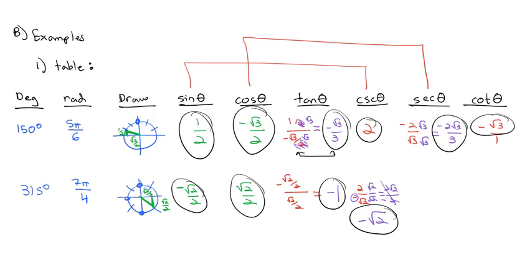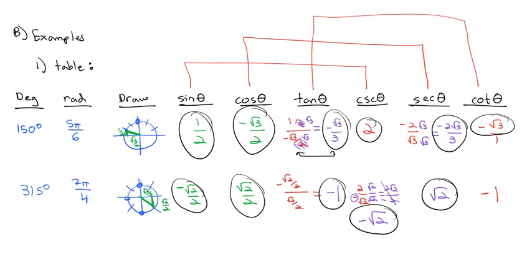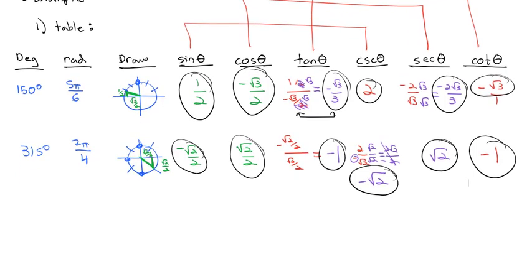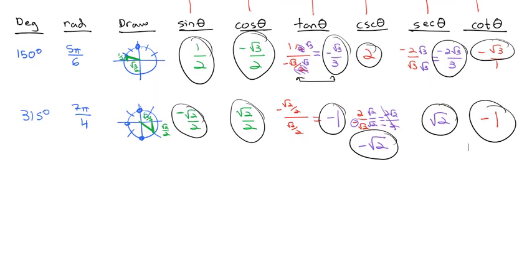Secant is the reciprocal of cosine, and in the same way we rationalize the denominator, it's the positive square root of 2 — positive because cosine is positive, so the reciprocal must be positive. For cotangent, the reciprocal of negative 1 is just negative 1. We've now found all six trig ratios for 7π over 4, or 315 degrees.